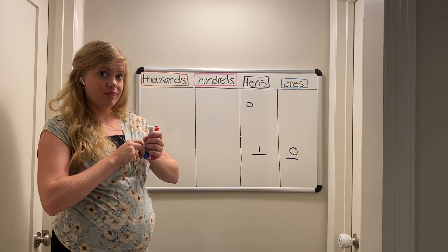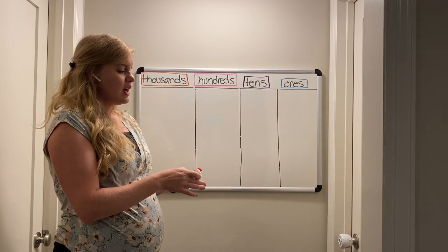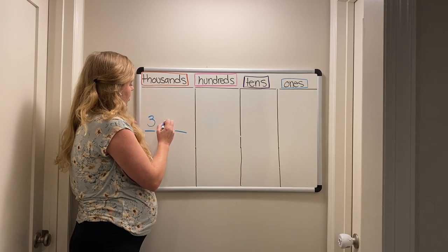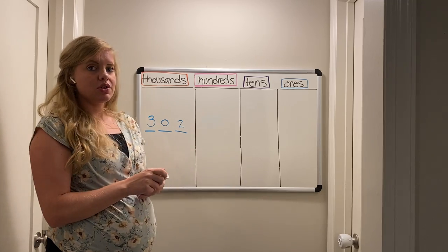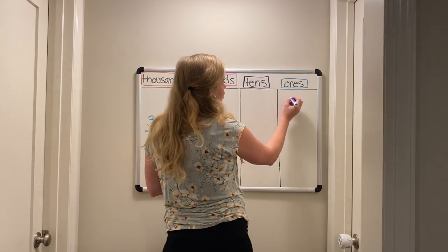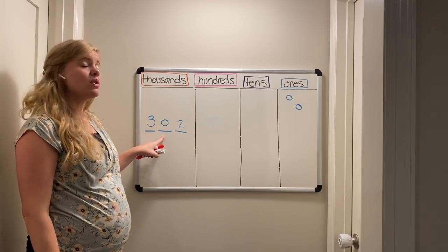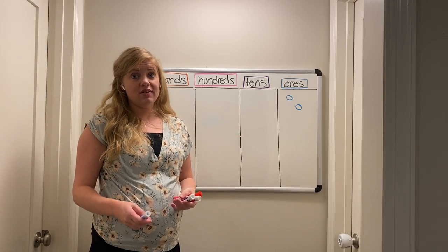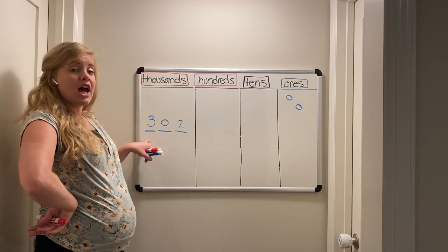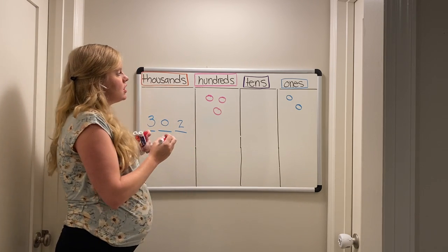How would we write 302 in our place value chart? I always start with the ones — I have two ones, so I put two blue circles in the ones place. I have zero tens, so I leave the tens blank because zero means nothing there. And I have three hundreds, so I draw three pink shapes in the hundreds place. Now I have three hundred and two.